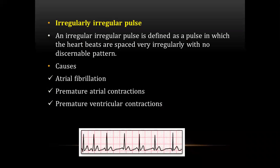The first question was about the irregularly irregular pulse. A patient condition with irregularly irregular pulse is defined as a pulse in which the heartbeats are not spaced regularly. The causes are atrial fibrillation, premature atrial contractions, and premature ventricular contractions.